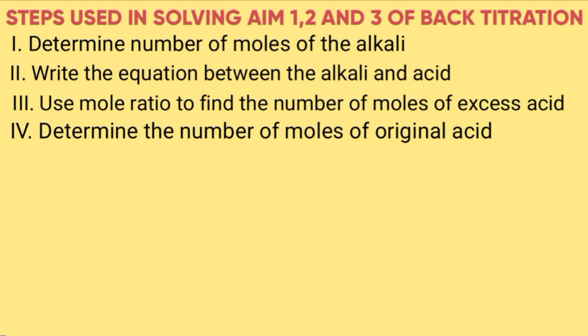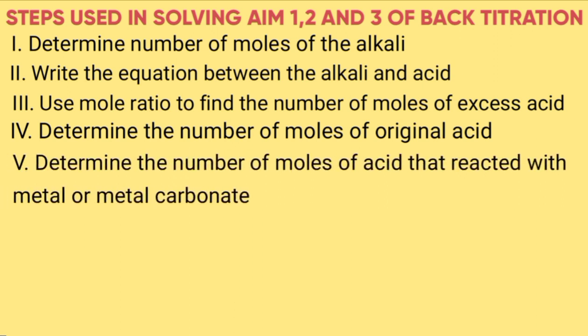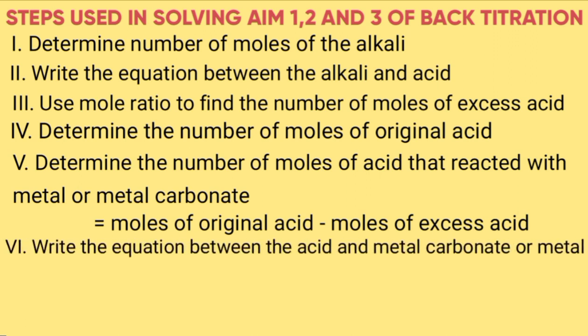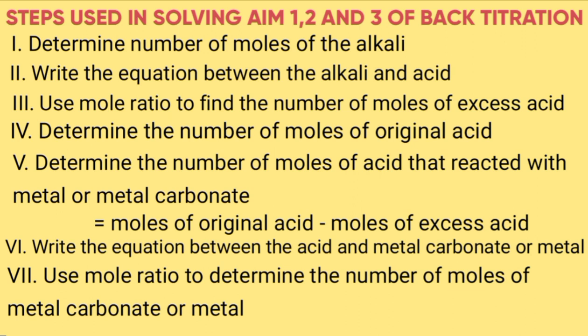Step 5: determine the number of moles of acid that reacted with the metal or metal carbonate by taking the original moles of the acid minus the excess moles of the acid — that is, the moles in step 4 minus the moles in step 3. Step 6: write the equation between the acid and the metal carbonate or metal. Step 7: use mole ratio to find the number of moles of the metal carbonate or metal. Step 8: solve the aim of the experiment — for example, when finding RFM, you calculate mass in grams over number of moles from step 7.